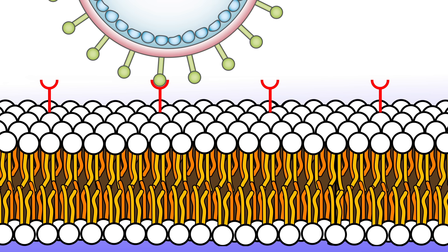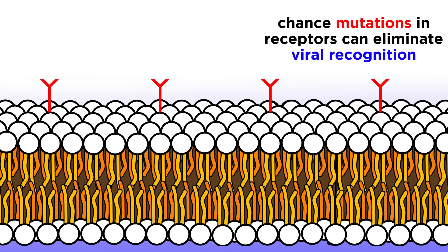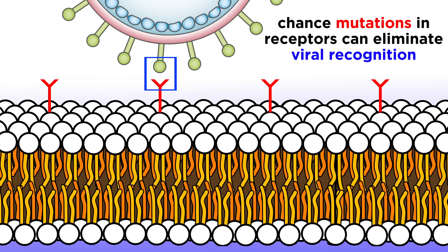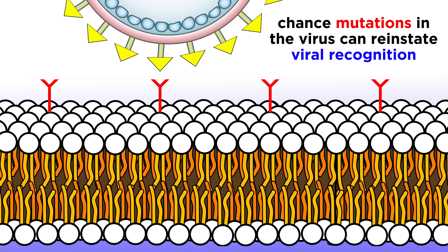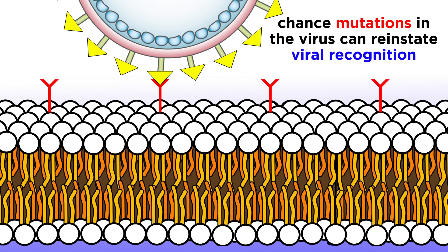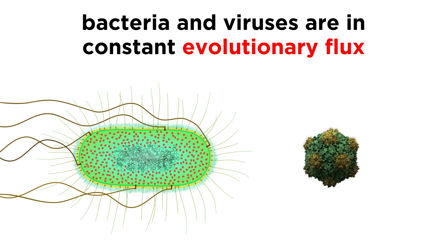But nature is clever, and bacteria are constantly evolving. Chance mutations in genes that code for surface receptor proteins may result in receptors that no longer recognize a particular virus, so it can no longer enter the cell. Viruses in turn mutate at random, and if glycoproteins on a viral envelope become modified such that they will be recognized by the new receptors, they will proliferate anew. In this way, bacteria and viruses are engaged in constant evolutionary flux.